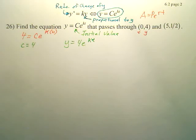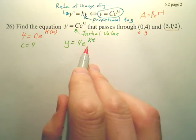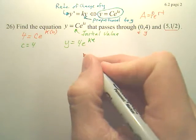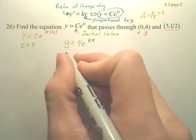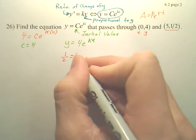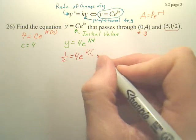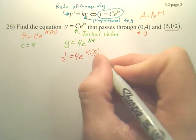And here's how you find k. You simply take this equation, plug it in. So we have 5 is our t, and 1/2 is your y. So this is 1/2 equals 4e^k. And t is 5.